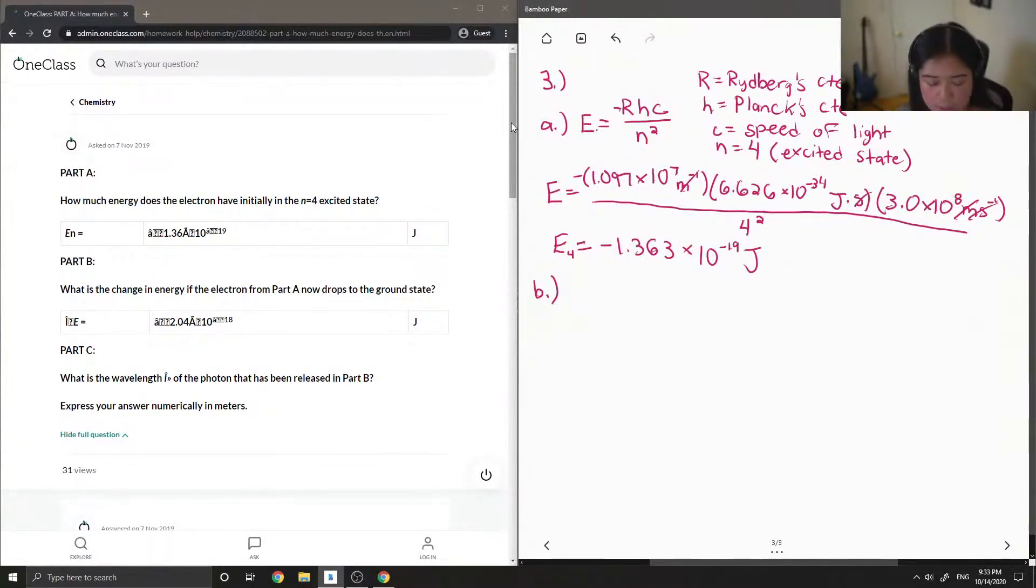So the second part asks what is the change in energy if the electron from part A now drops to the ground state. So this means that it used to be N equals 4. So this is our initial N, and N final is equal to 1 which is ground state. So now I'm going to use this equation right here which calculates the change in energy